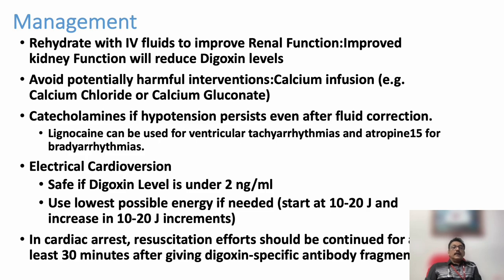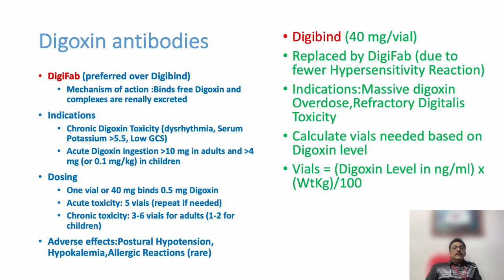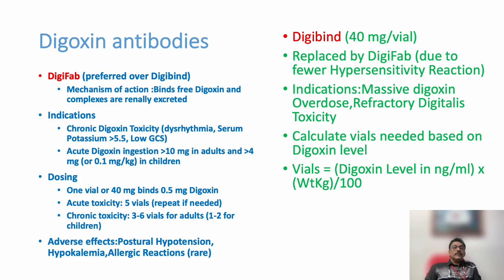There are two important antidotes for Digoxin toxicity: Digifab and Digibind. Digifab is preferable over Digibind. The mechanism of action is that it binds free Digoxin and the complexes are renally excreted; if the patient has renal failure, dialysis is required. Indications include chronic Digoxin toxicity with dysarrhythmia, serum potassium above 5.5, low GCS, or acute ingestion above 10 mg in adults and above 4 mg in children. One vial (40 mg) binds 0.5 mg of Digoxin; acute toxicity may require 5 to 10 vials.